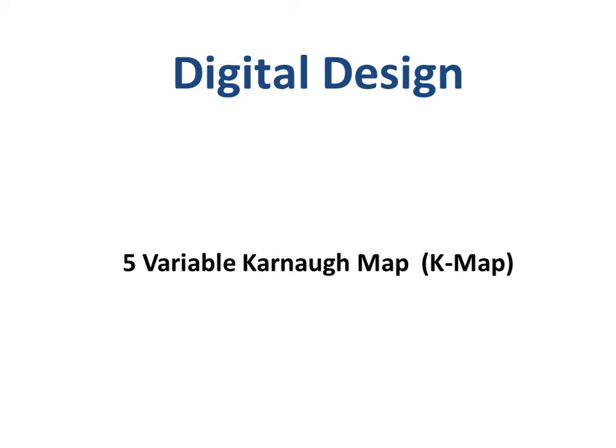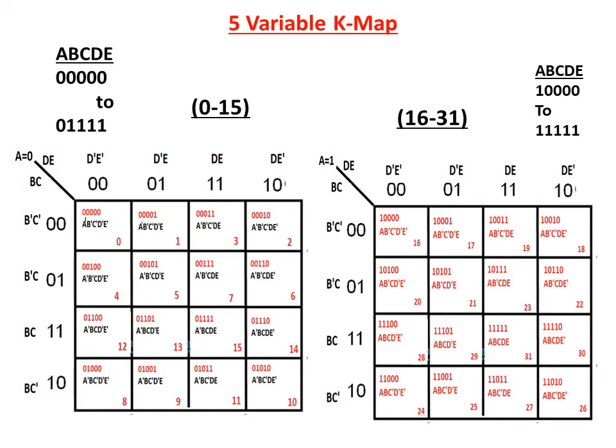In this video, I am going to discuss about the 5-variable K-map. In this 5-variable K-map, 2 to the power 5 is equal to 32, so 0 to 31 K-map cells are present. Here, two 4-variable K-maps are used. The variables are A, B, C, D, E.